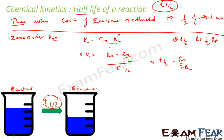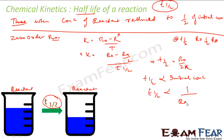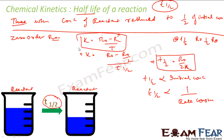Notice that T½ for a zero-order reaction is directly proportional to the initial concentration and inversely proportional to the rate constant. Please remember this formula — it's useful for solving questions faster.